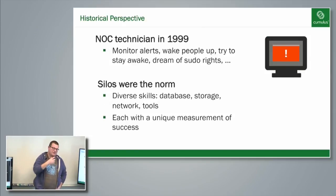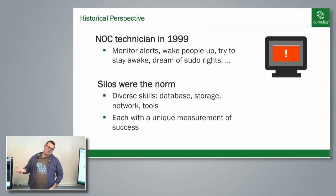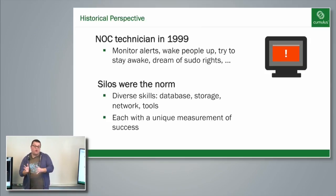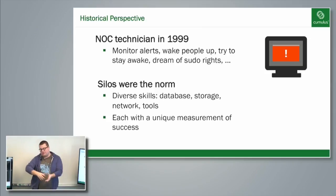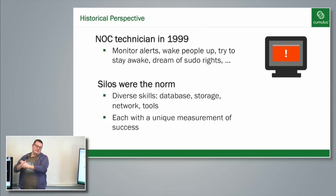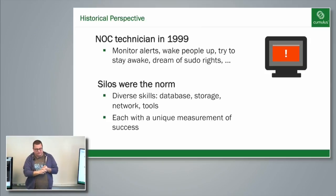I want to talk a bit about the cultural perspective. When I started at Cumulus, one of the challenges is that a lot of people like to frame it as: you're either far to the left, meaning you like DevOps tools and Ansible is going to solve all the world's problems, or you're far to the right and you're a CLI jockey cutting and pasting commands from Notepad. I think both of those extremes are not valid. There's a happy medium, and that's what we focus on in my part of the organization.